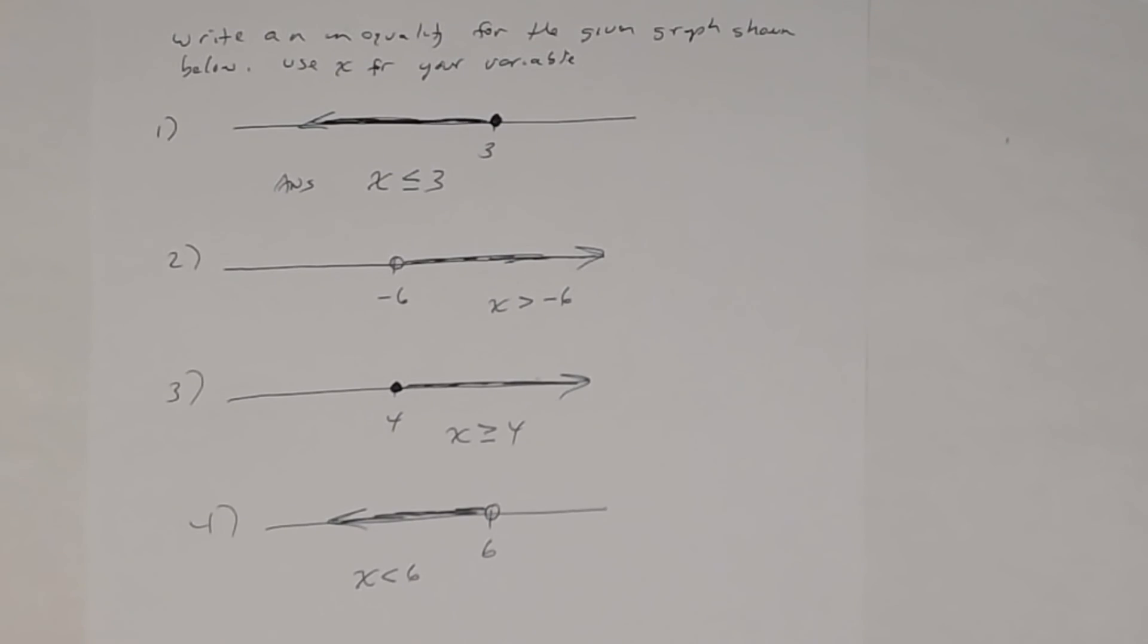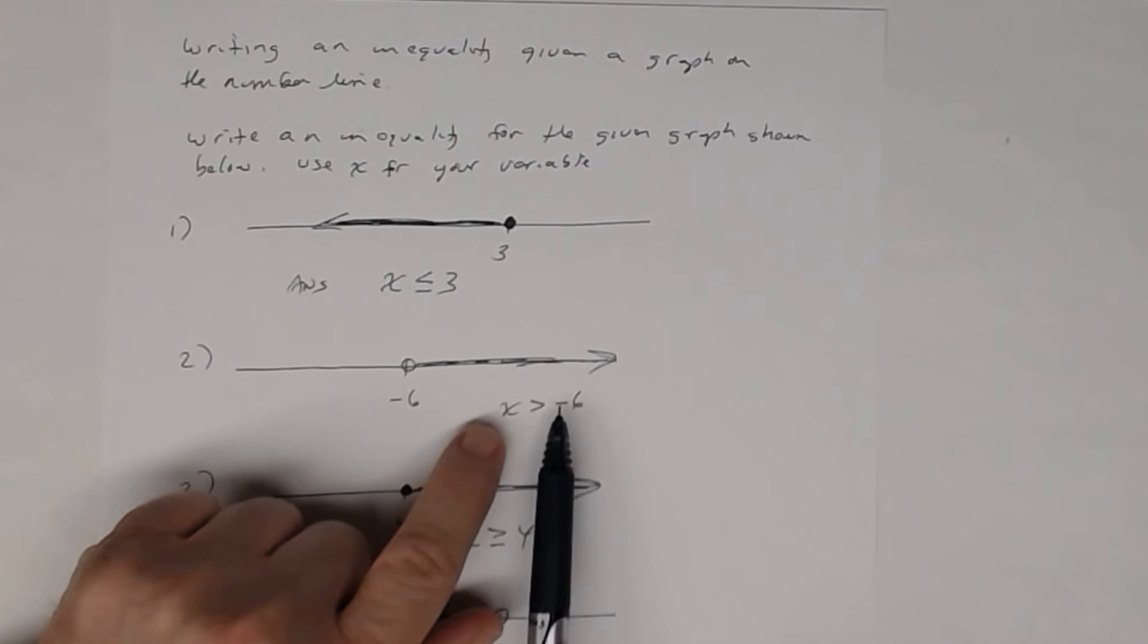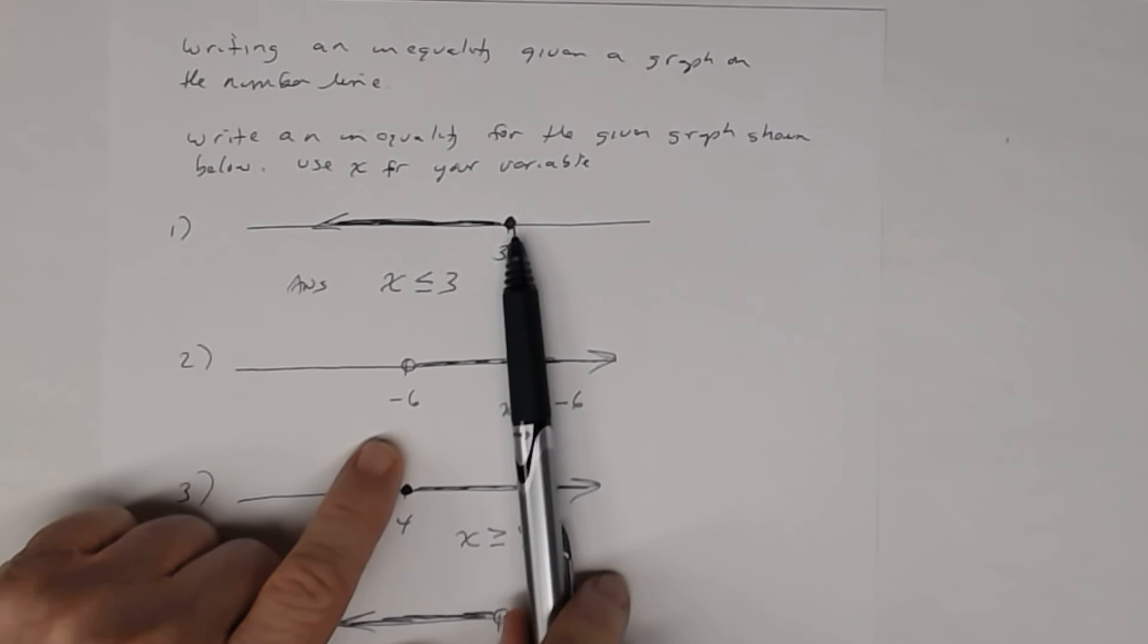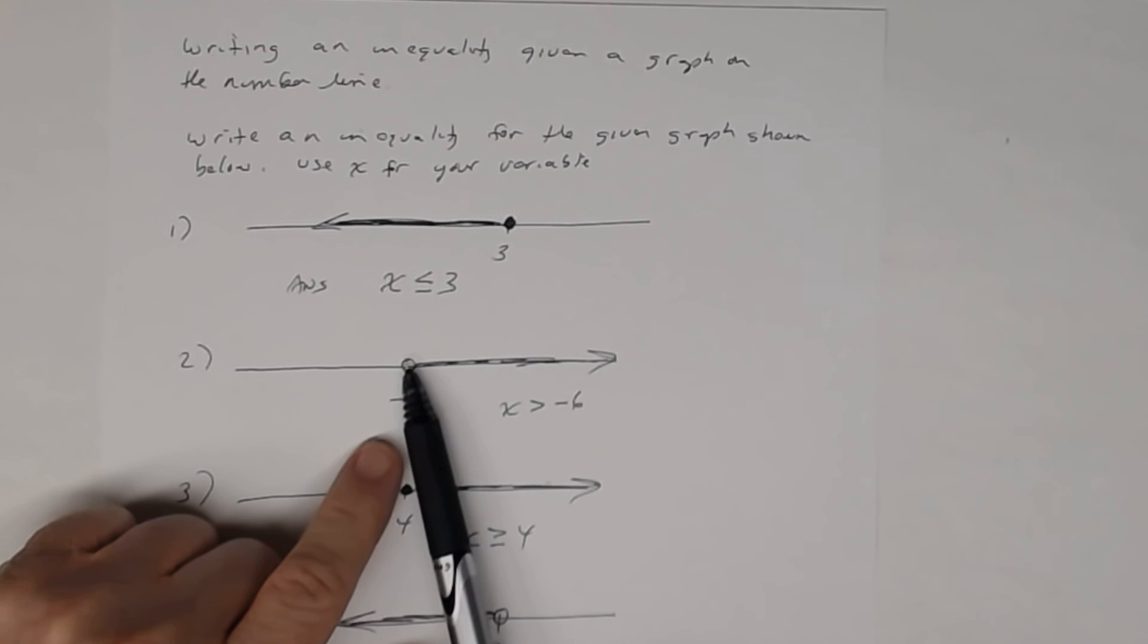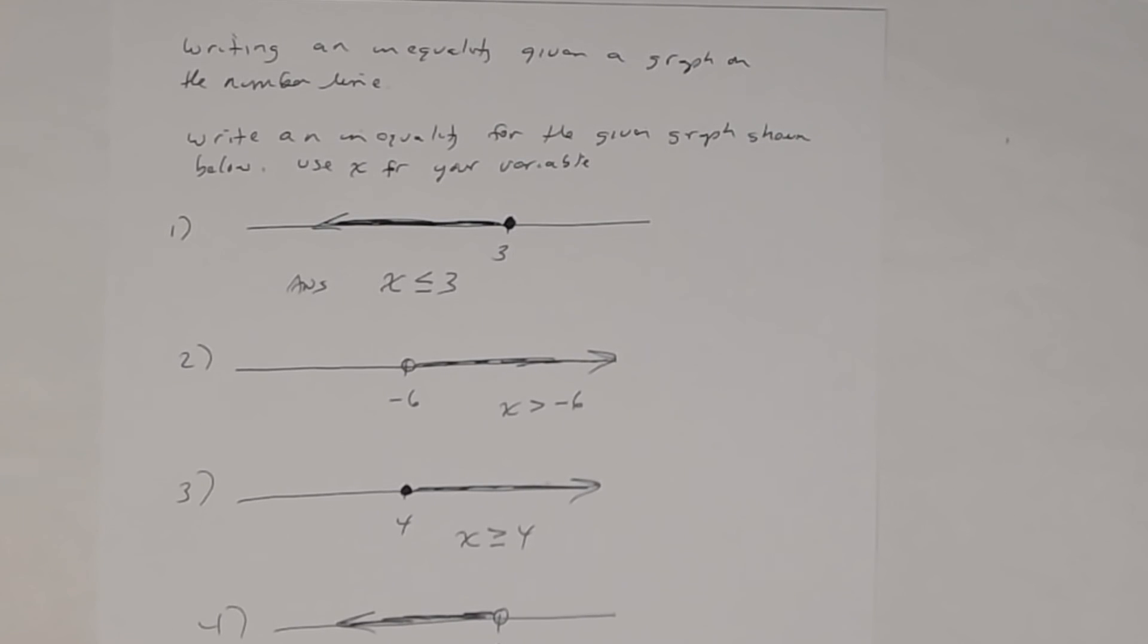That's all you have to know. It's not a very difficult concept. Given a graph, write the inequality. You just have to know that a closed circle means an equal sign, and an open circle means no equal sign. That's it, that's the end of this lesson.